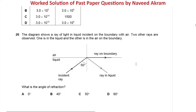Now a question from October/November 2019 Paper 1 Variant 1, question number 26. The diagram shows a ray of light in a liquid incident on the boundary with air. Two other rays are observed — one in the liquid and one in the air along the boundary. What is the angle of refraction? If you've studied critical angle, it should be evident: the angle of refraction is 90 degrees. The refracted ray travels along the boundary surface, so the angle between the refracted ray and the normal is 90 degrees.